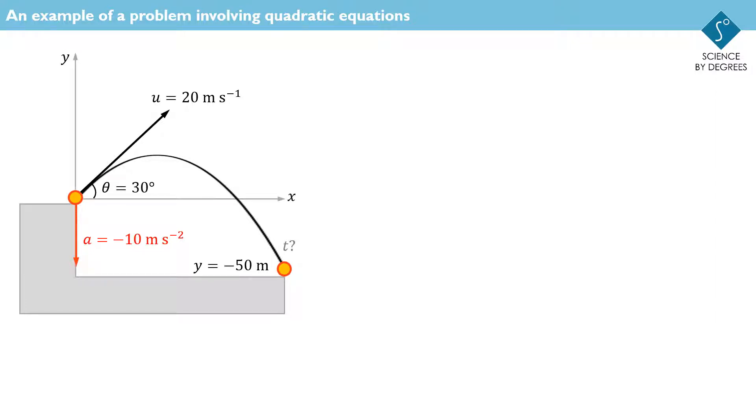The initial velocity u has horizontal and vertical components, which can be found using the cosine and sine, respectively, of the angle theta.